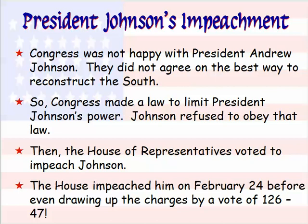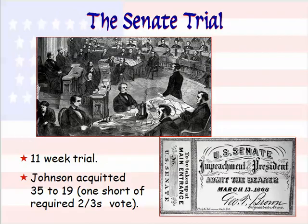The Senate trial lasted 11 weeks, but Johnson was found not guilty — he was acquitted and was able to keep his job. The vote was 35 to 19, which came just one vote short of the required two-thirds majority to have him removed. He came very close to being the first president fired while in office.